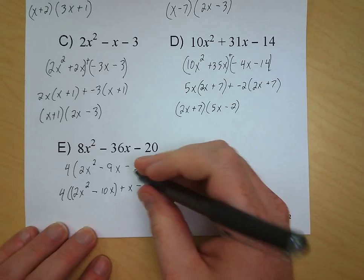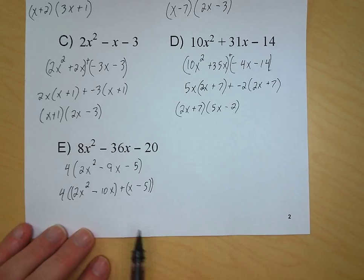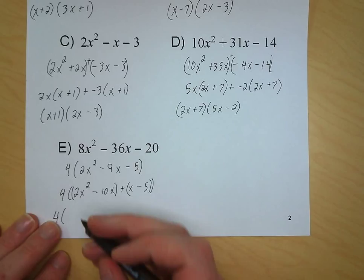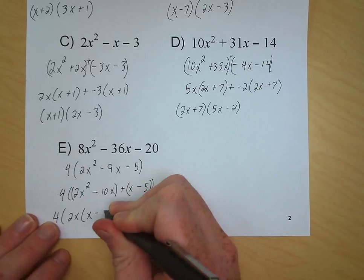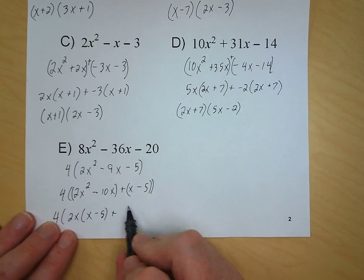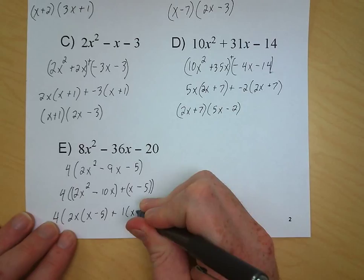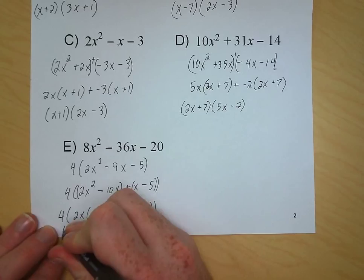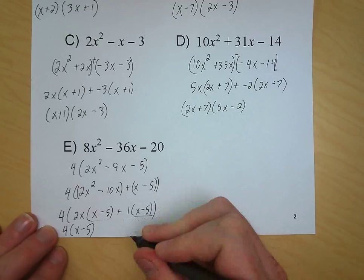Now we can see we have two sets of parentheses inside a larger group, with the 4 on the outside. The common factor between 2x squared and negative 10x is 2x, and what remains is x minus 5. We have our plus sign, and the common factor in x minus 5 is 1, leaving x minus 5 again. Our last step is to factor out the common term x minus 5 from each group. We rewrite our 4, write x minus 5 as the factor we pulled out, and what remains is 2x plus 1.